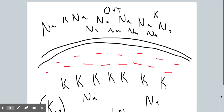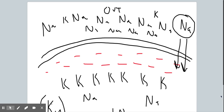From a concentration gradient point of view, sodium wants to move from high concentration to low — the concentration of sodium is high outside the cell and low inside, so sodium wants to flow into the cell. From a charge perspective, sodium is positively charged and the inside of the cell is negatively charged — opposites attract — so electrically, sodium also wants to flow inside. From this electrochemical perspective, sodium really wants to flow inside the cell, and there is a strong driving force for sodium to enter.